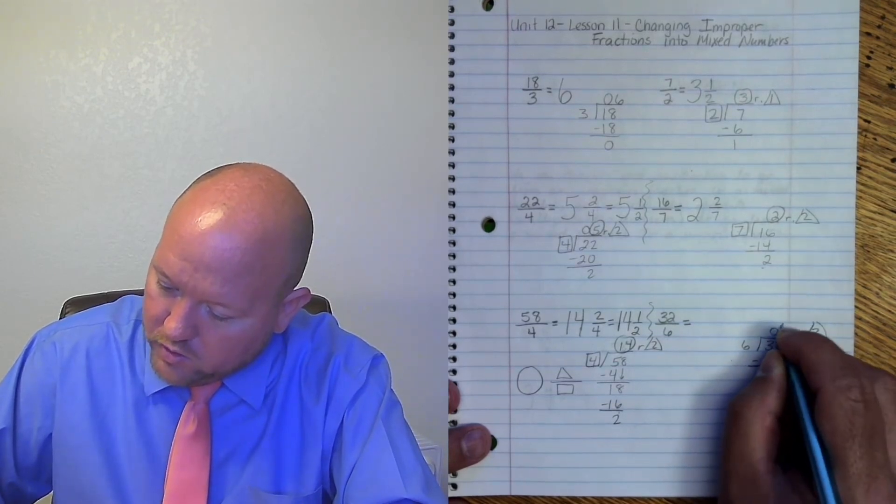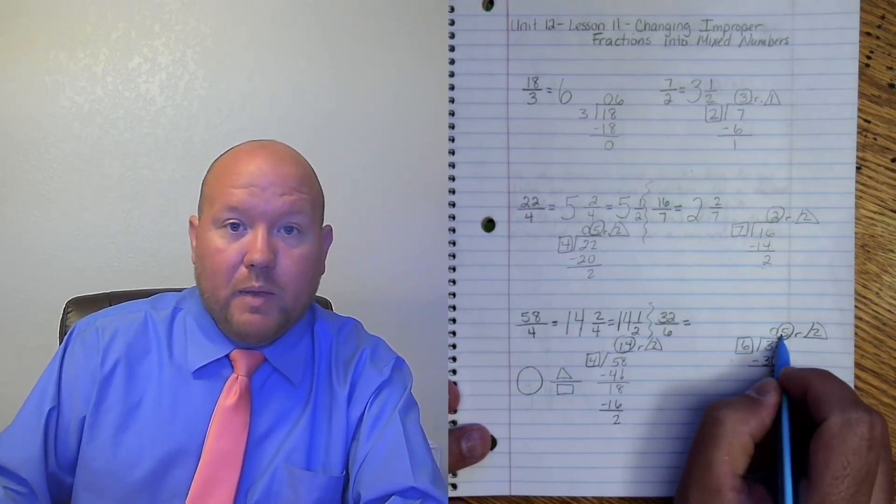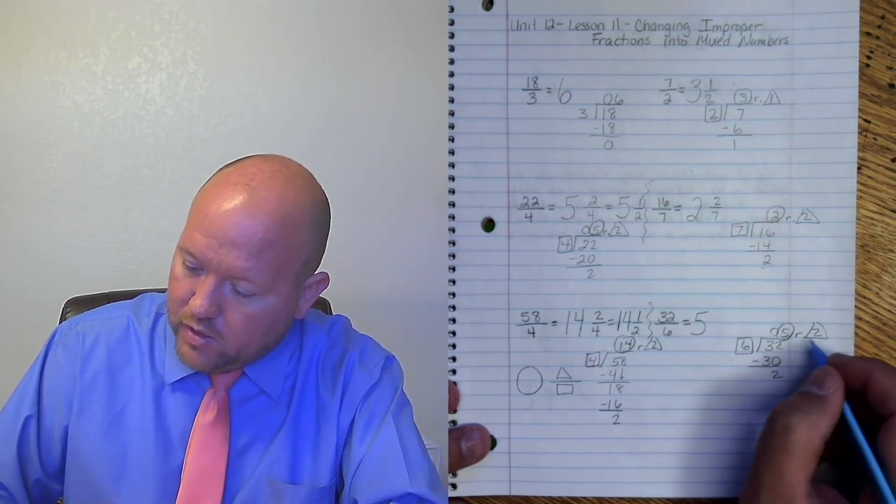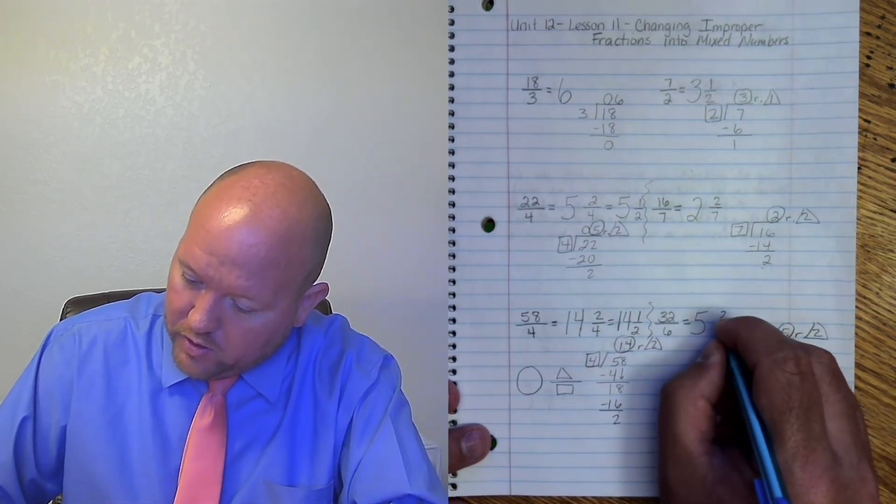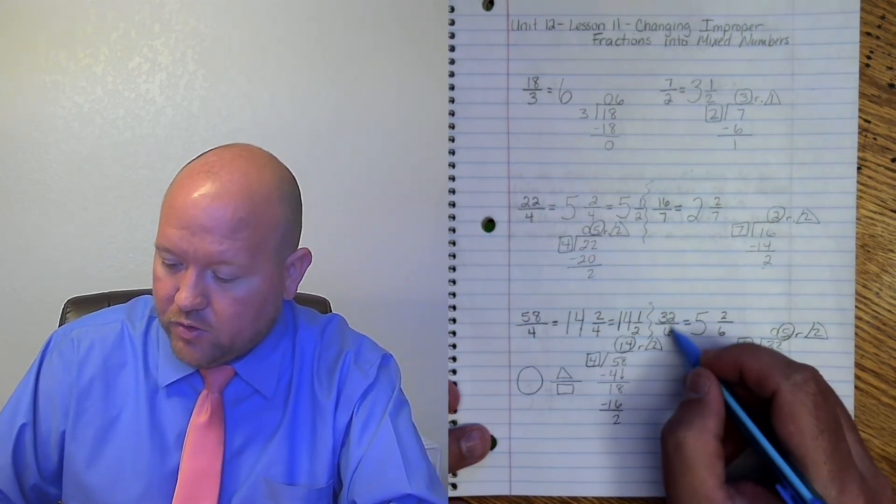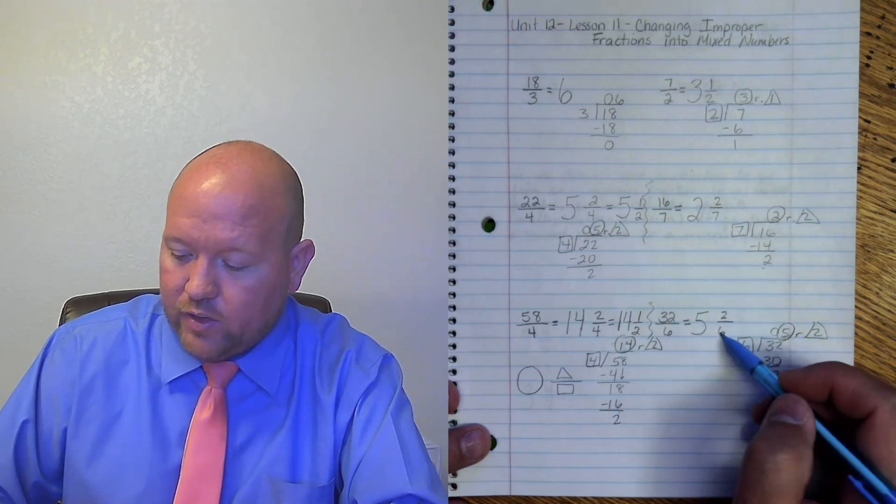Triangle circle square. My circle is my whole number. So 5 goes right here. Triangle is my numerator. It goes right there. 6 is my denominator. It goes right there. So 32 sixths equals 5 and 2 sixths.